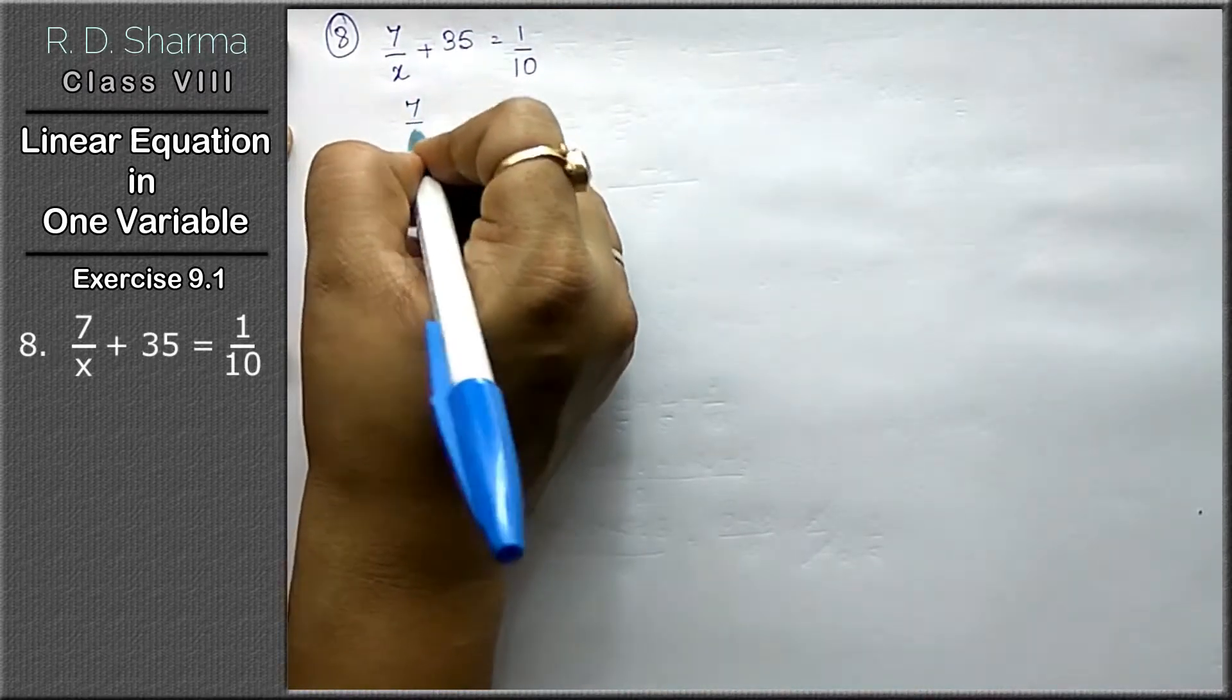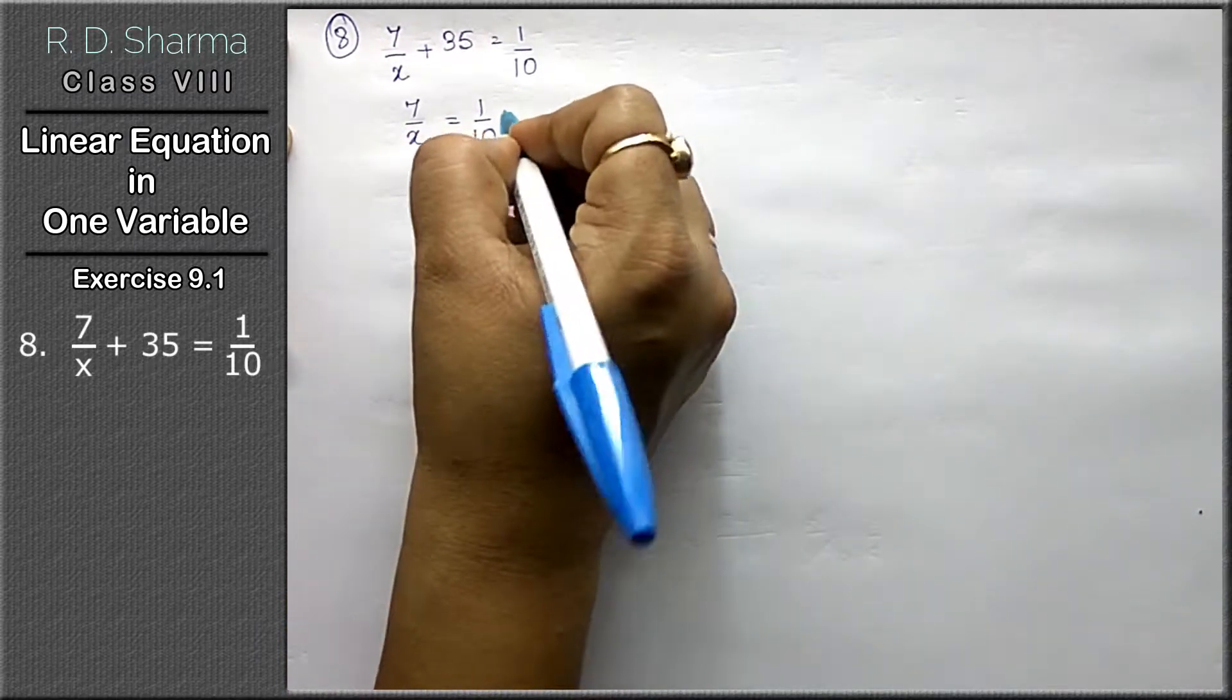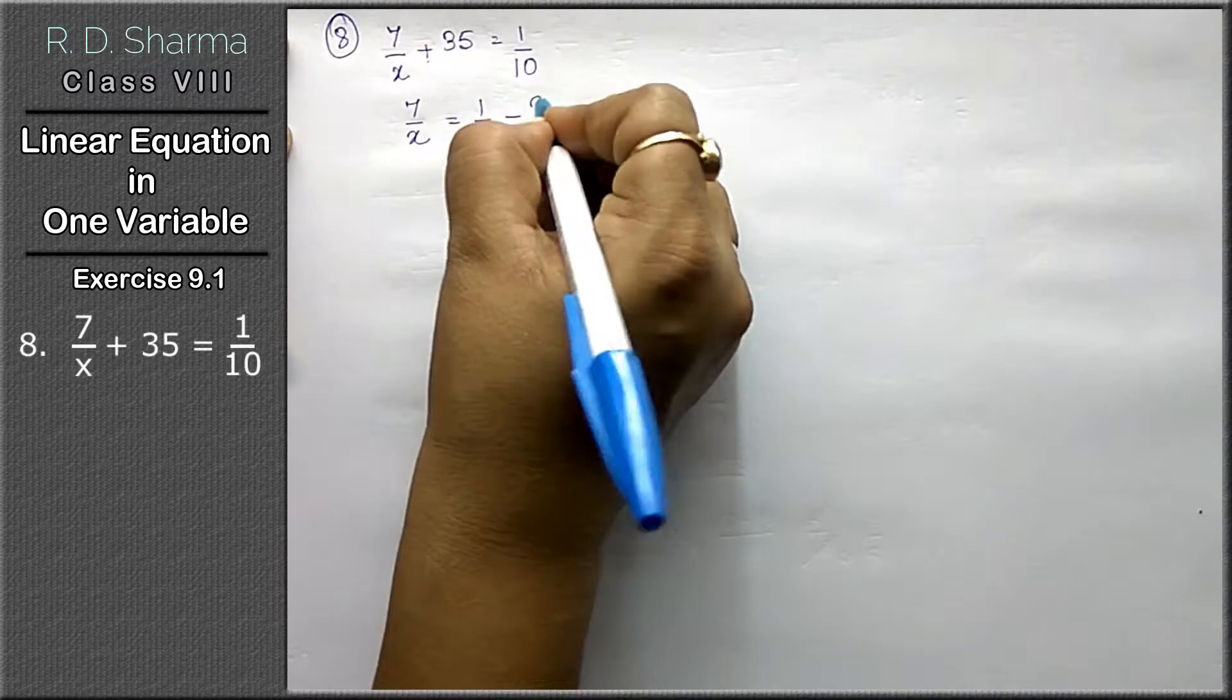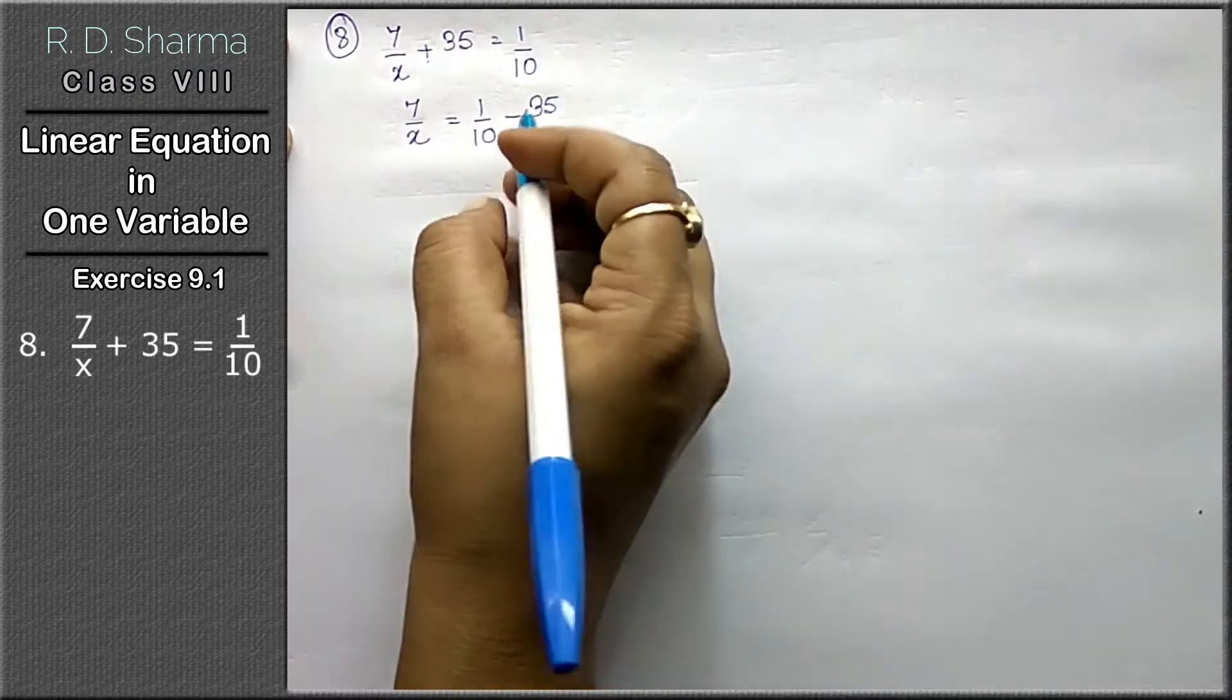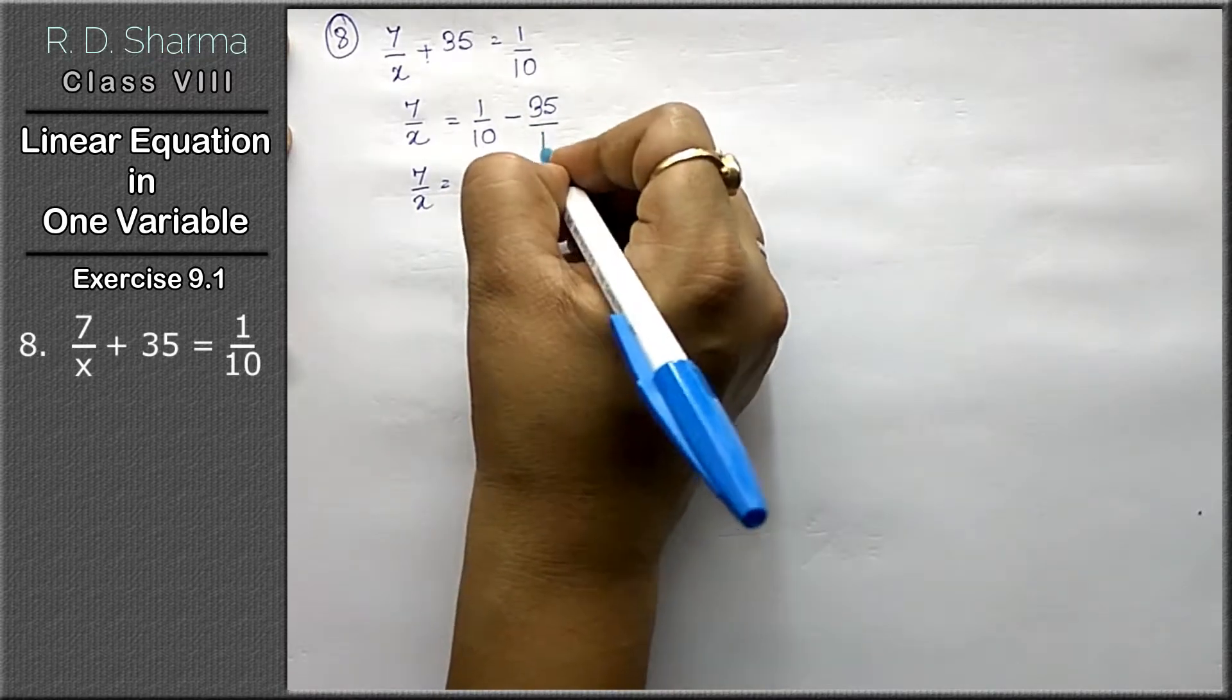Now x ki terms x side, non x ki terms doosri side. Plus ka minus ho gaya upon minus 35. 7 upon x, x it is. Nothing is written, we will write 1.